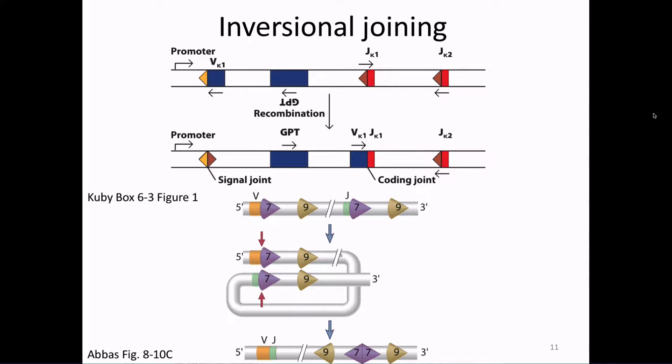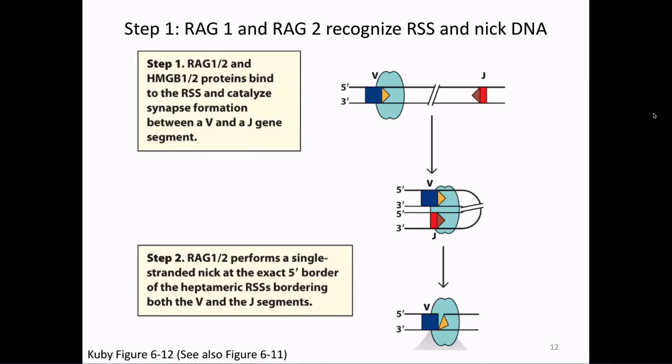There are two proteins that work together as the nuclease: RAG1 and RAG2, the recombination activating gene 1 and recombination activating gene 2. They usually work together so closely that you often see it written as RAG1-2. Formally, RAG1 binds the RSS and RAG2 makes the cut, but they work together — they're binding very close together and both recognizing and making the cut.